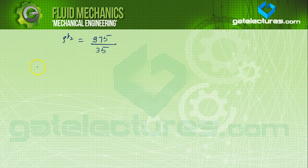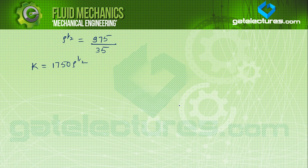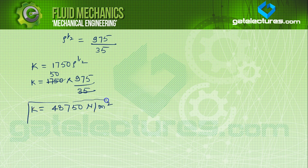Now ρ^(1/2) = 975/35. Substituting back: K = 1750 × ρ^(1/2) = 1750 × (975/35). Solving: K = 1750 × 975/35, which is approximately equal to 48,750 newton per meter square.